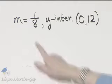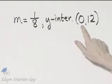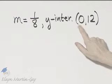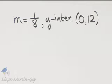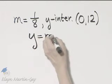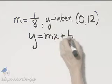Let's write an equation of the line with this slope and this y-intercept. Now, by the way, we're given a special point, that special point being the y-intercept, so if we'd like, we can use the y equals mx plus b form.